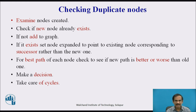We must also check for duplicate nodes by examining the nodes created. If a node does not already exist, add it to the graph; if it does exist, set the expanded node to point to the existing node rather than creating a new one. For each path of each node, check whether each path is better or worse than the old one, make a decision, but take care of cycles.